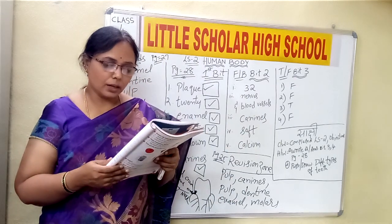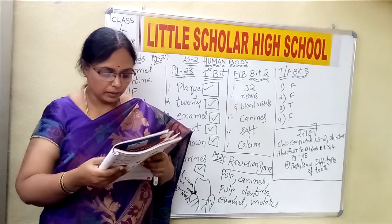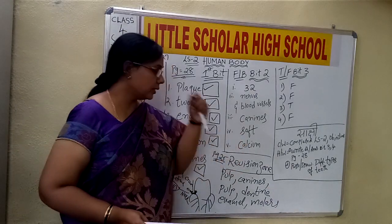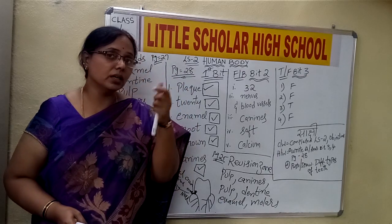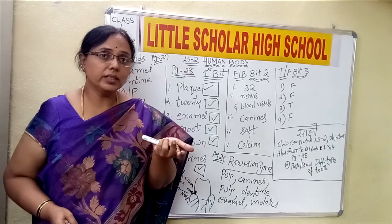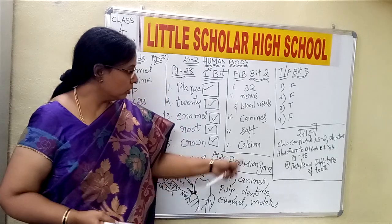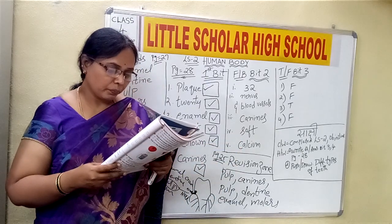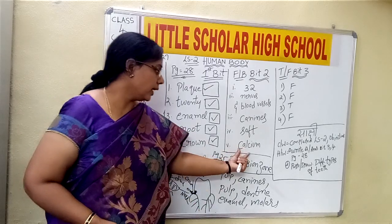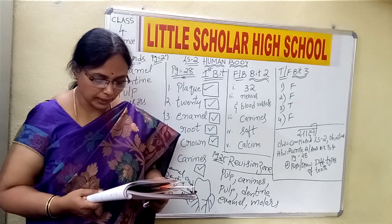Sharp pointed teeth that help to tear food — the teeth which help in tearing the food are canines. Then always use a toothbrush with soft bristles and change it every three months. We should always have soft bristles, otherwise the gums will get damaged. When using a very hard brush during brushing, the gums get damaged and it leads to bleeding of the gums, which is painful. So we have to always use a brush with soft bristles. We must have calcium-rich food for strong and healthy teeth. Calcium is the mineral which is good for the healthy growth of bones as well as teeth.